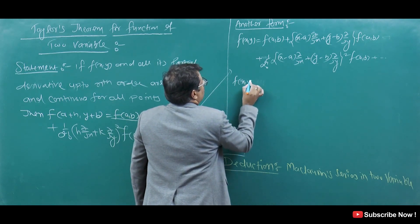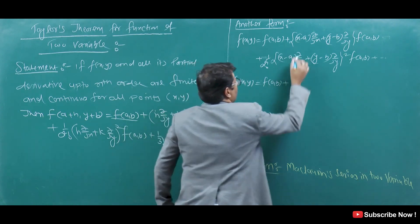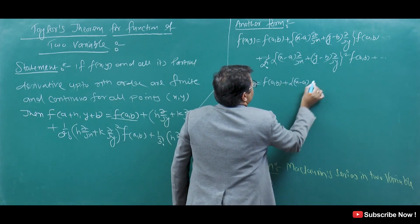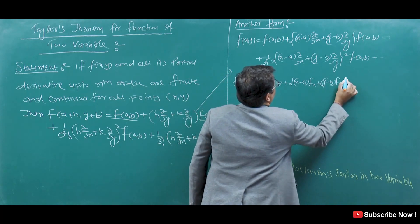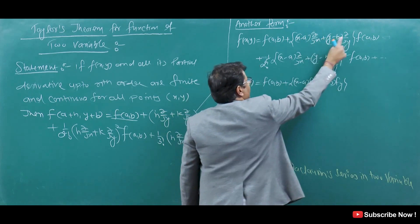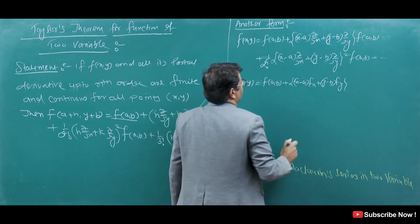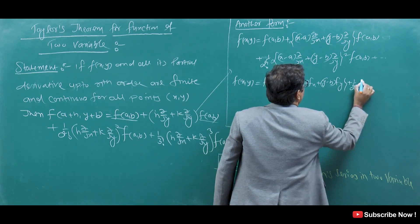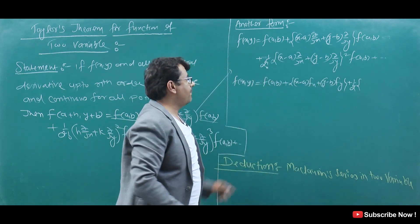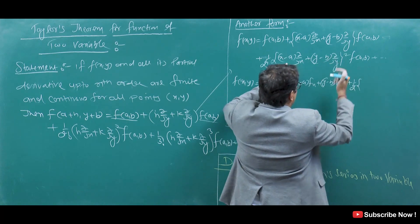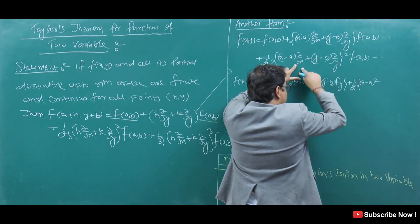f(x,y) is equal to f(a,b) plus (x minus a) fx plus (y minus b) fy. But here we are doing partial derivatives: del f by del x, del f by del y. Plus 1 by 2 factorial — now this is (a plus b) whole square, which expands as a square plus b square plus 2ab, so (x minus a) whole square.